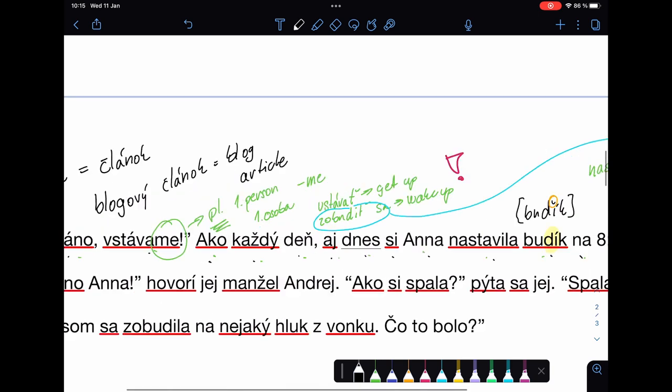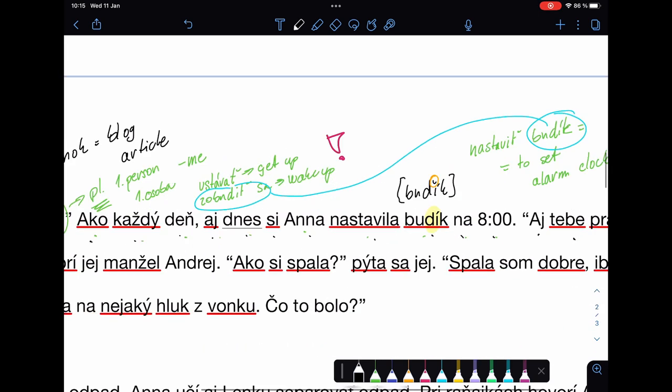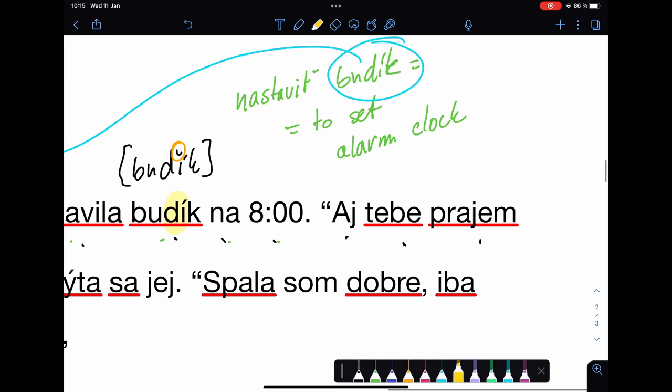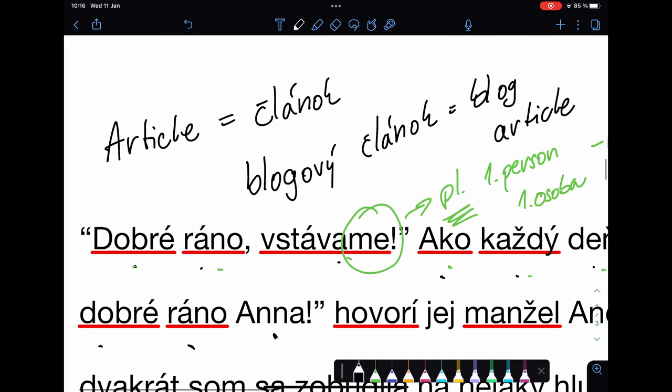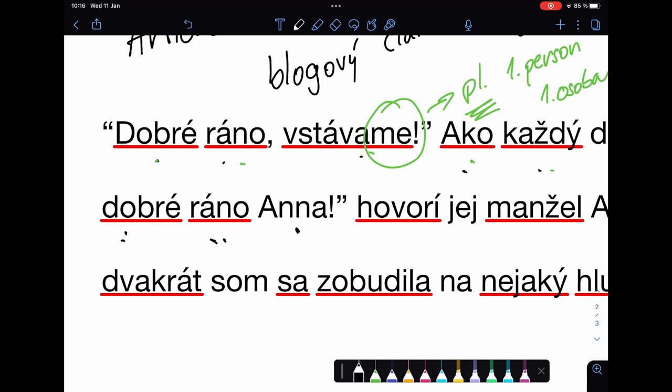Aj tebe prajem dobré ráno, Anna. We can see again, it's pronounced like tebe, although we don't write this upside down big. So, to you as well, I wish - prajem, to wish - good morning, Anna.